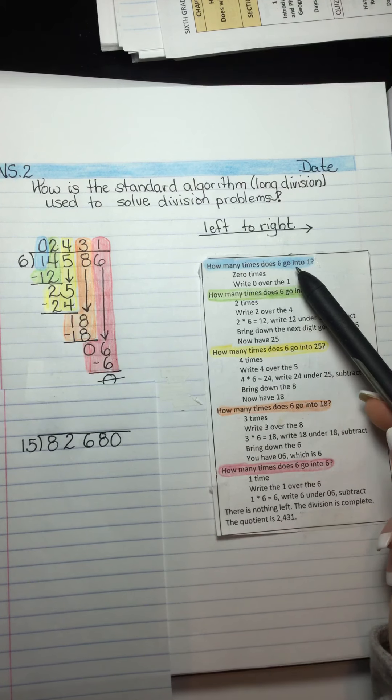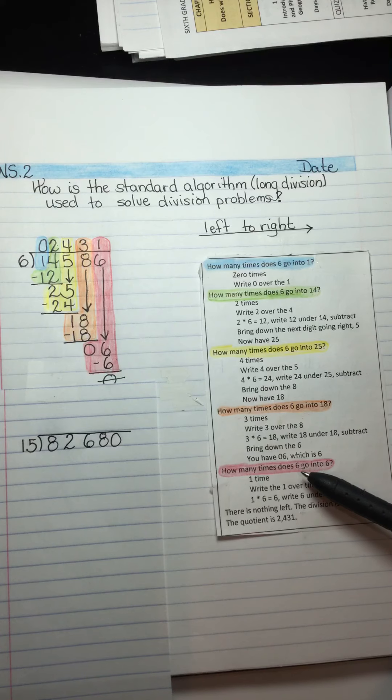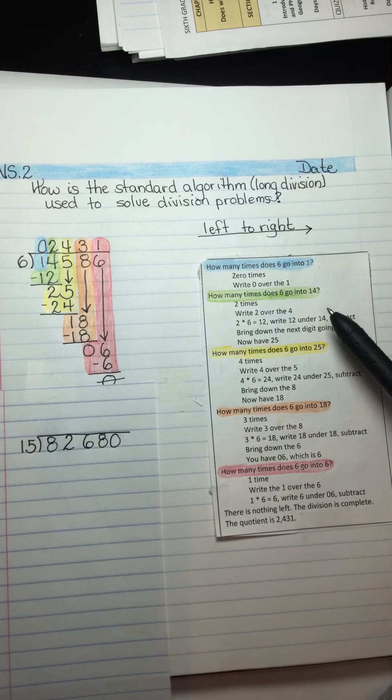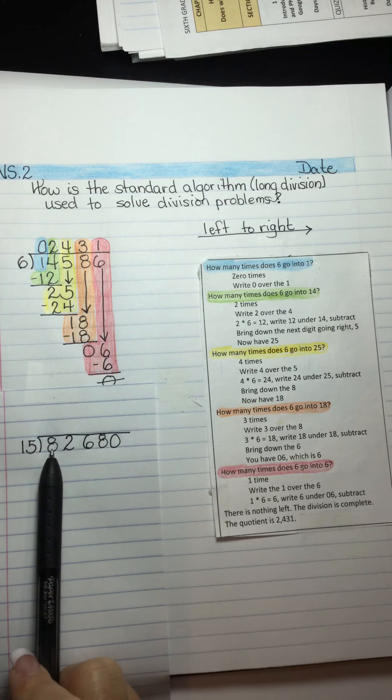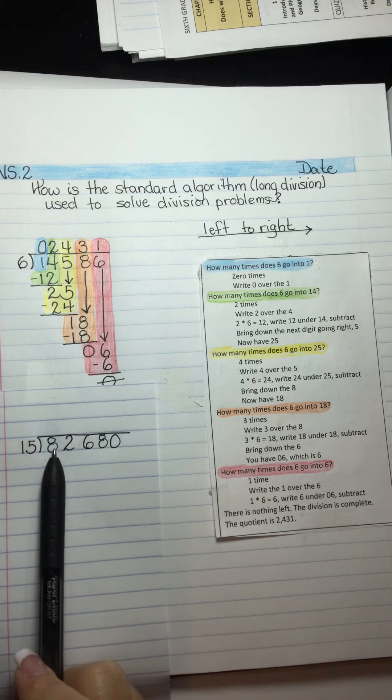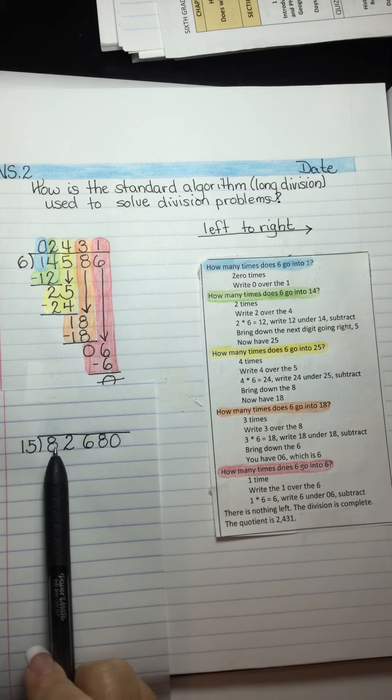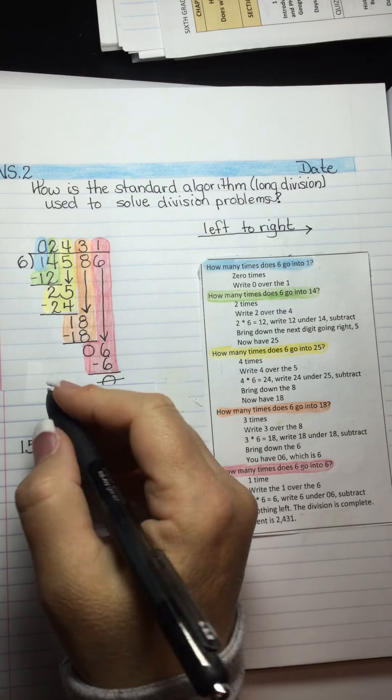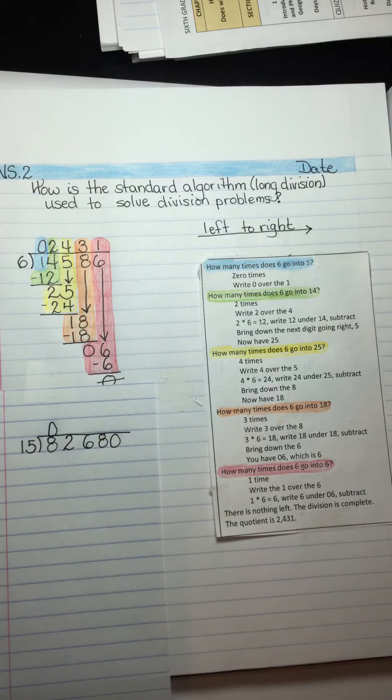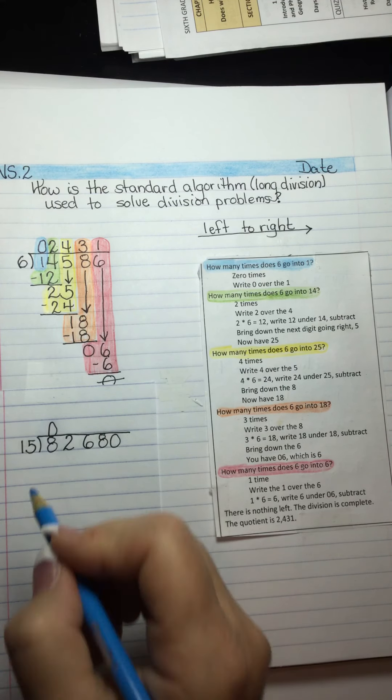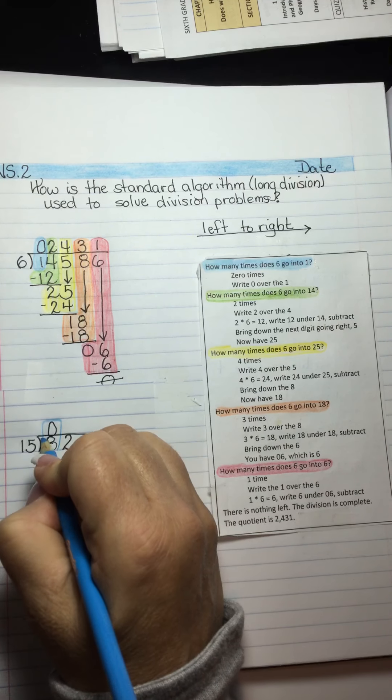We're going to follow the same basic steps that we did in the first example. The numbers are going to be different, but it's the same basic steps. We're going to start with the first digit, or the digit farthest to the left in the dividend, and we're going to work our way right. So we're going to ask ourselves, how many times does 15 go into 8? And it goes in 0 times, so we're going to put that 0 up above. So that was the first step.